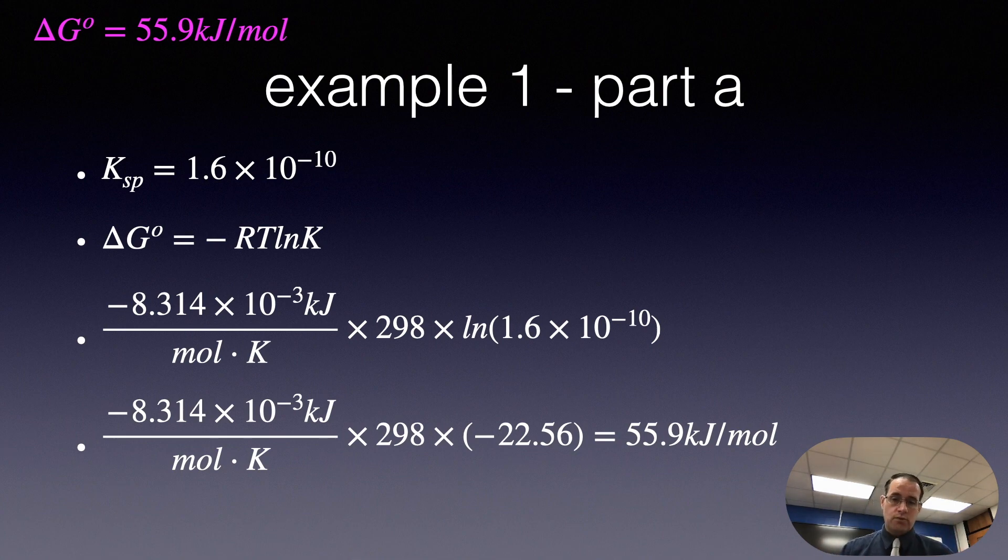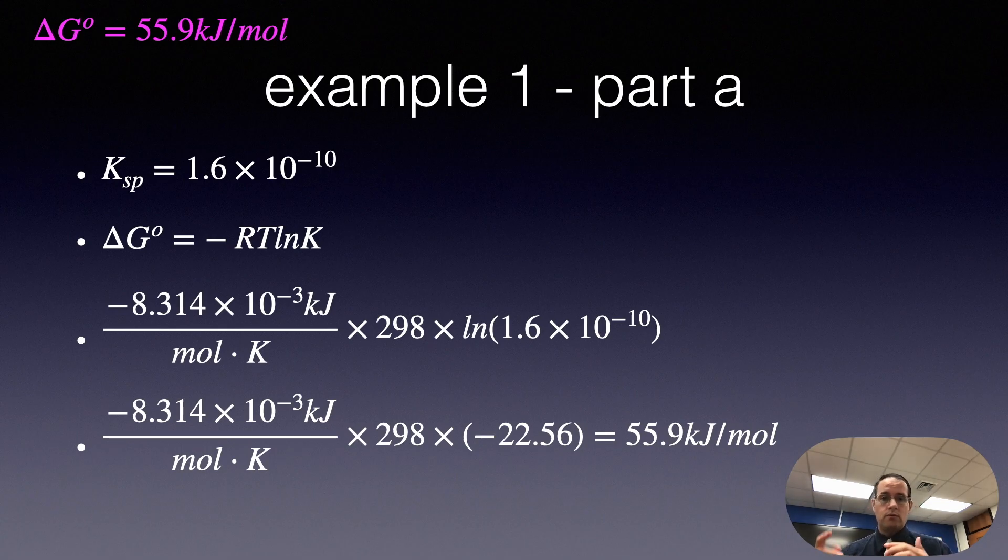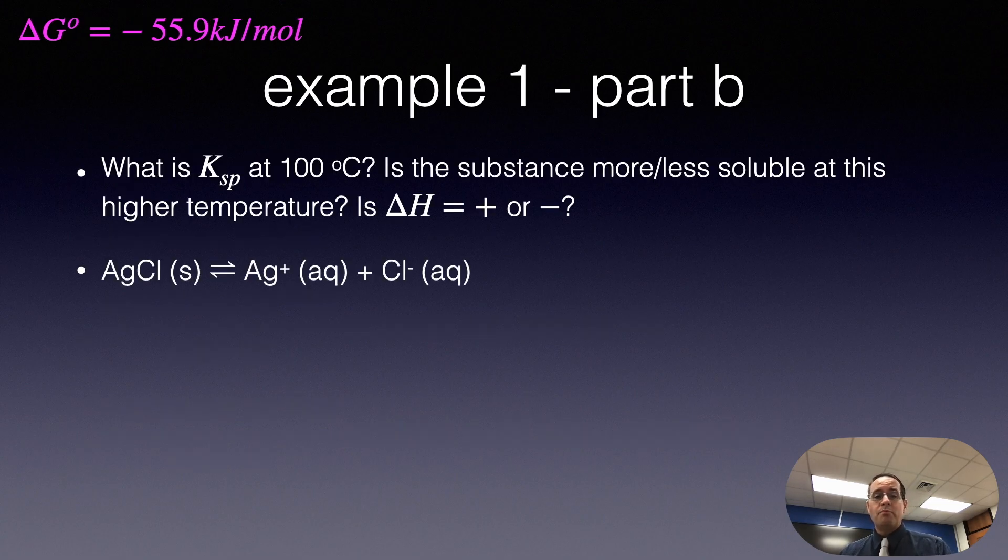We don't have to do all the ΔH work and the ΔS work and watch out for the coefficients and products minus reactants and all that. Let me show you part B now. So in part B, we know the ΔG here in the upper left-hand corner from part A. And we want to know, what is the Ksp at 100°C? Is the substance more or less soluble at this temperature? Is ΔH positive or negative?